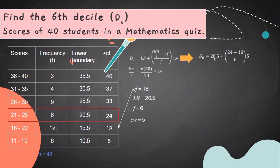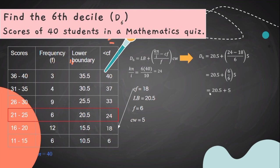Substituting into the formula: 20.5 plus open parenthesis 24 minus 18 over 6 close parenthesis times 5. So 24 minus 18 equals 6. Then 20.5 plus open parenthesis 6 over 6 close parenthesis times 5. Since 6 over 6 times 5 equals 5, we get 20.5 plus 5 equals 25.5.